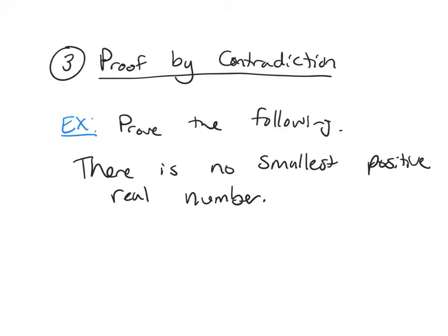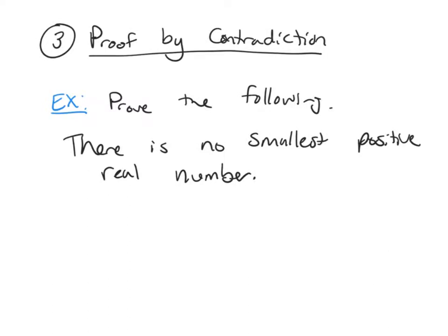This would be an example that would be a great use of proof by contradiction, because we're trying to show that something doesn't happen, that there's no smallest positive real number. It's kind of hard to show that something doesn't happen. So we're going to do this as a proof by contradiction.